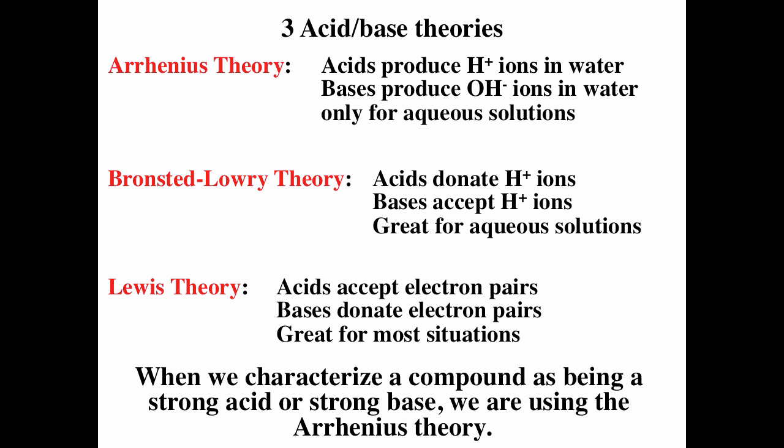We've talked about three acid-base theories: the Arrhenius theory, Bronsted-Lowry theory, and Lewis theory. For characterizing strong acids and strong bases, we use the Arrhenius theory. The Arrhenius theory says that if you add it to water and it produces hydrogen ions, then it must be an acid. If you add it to water and it produces hydroxide, it must be a base.